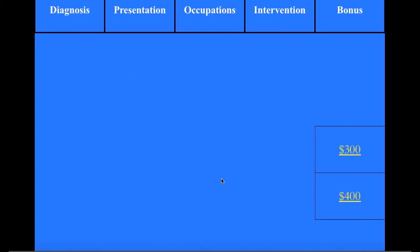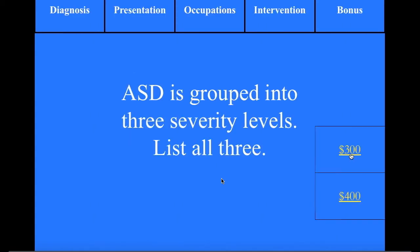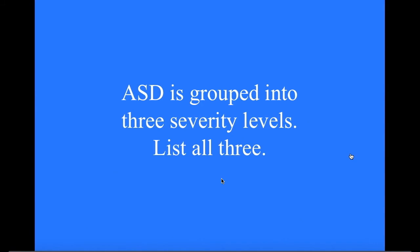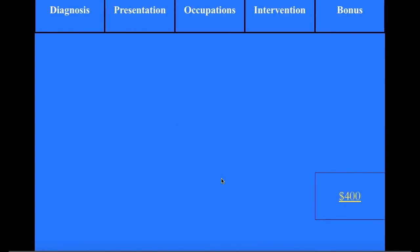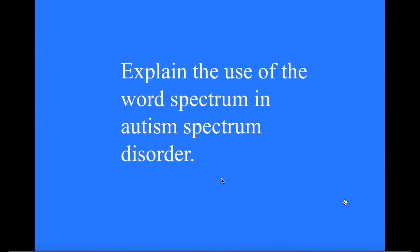Bonus for 300: ASD is grouped into three severity levels — list all three. What is level one requiring support, level two requiring substantial support, and level three requiring very substantial support? Bonus for 400: Explain the use of the word 'spectrum' in autism spectrum disorder. What is the vast and varying degree of possibilities of presentation of symptoms in nature?